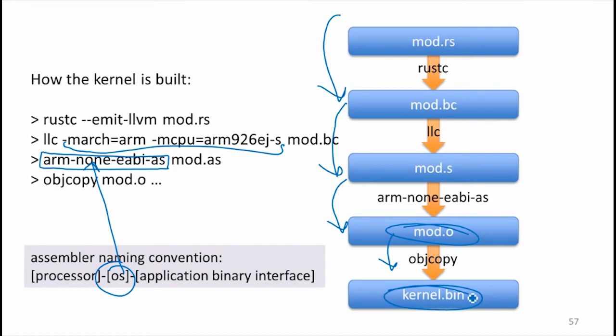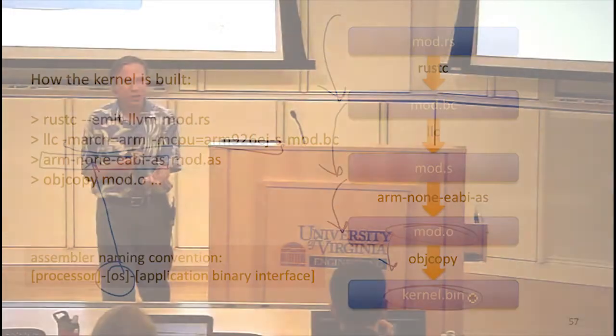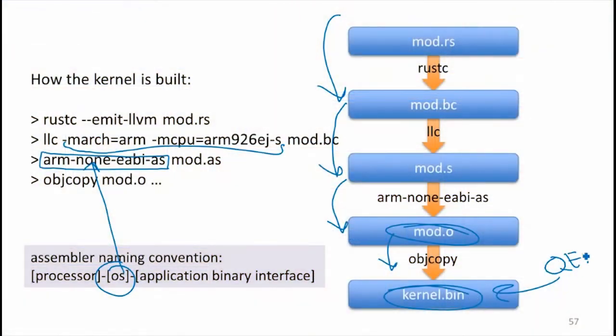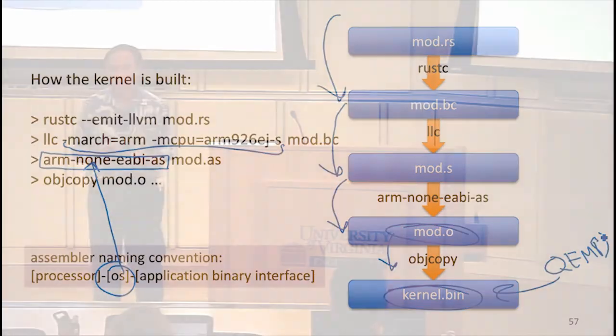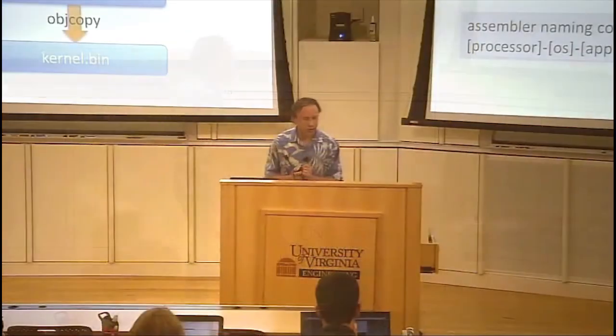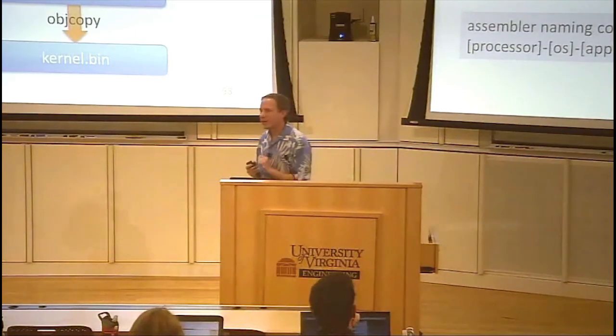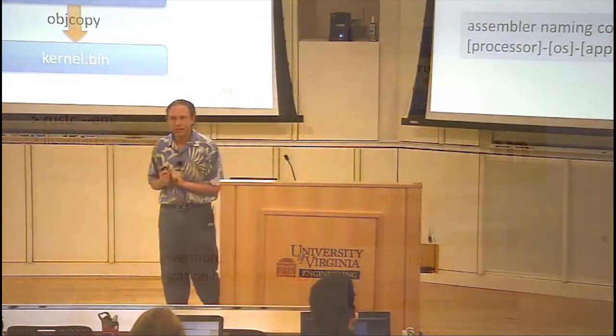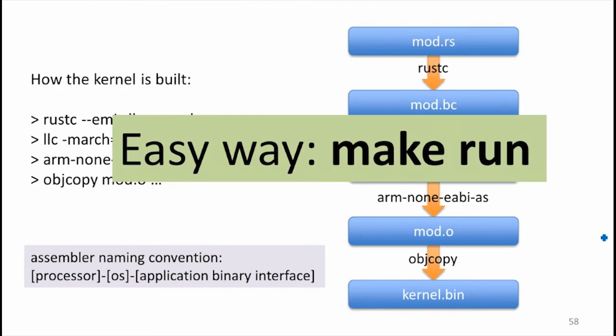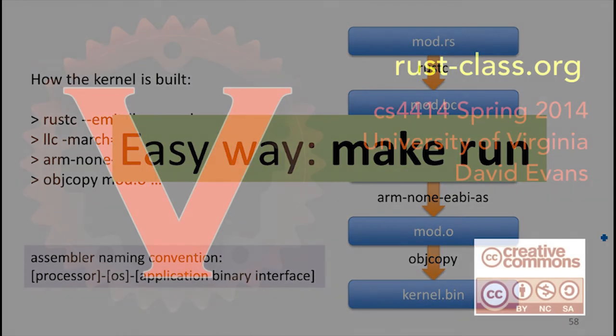When you run QEMU, it starts a simulation of the processor with your binary in memory and the program counter pointing to the start of that binary. You don't have to go through all those steps manually — just look at the make file if you're curious. All you have to do is run `make run`, and it will go through all those steps and start your new kernel in QEMU.